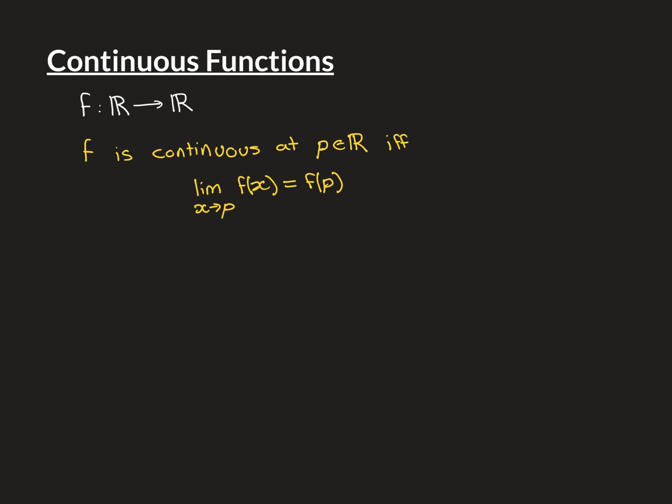If this is true for all elements of the domain, then we say the function is continuous over the entire domain. If the domain is the entire real line and the function is continuous at every point, we say it's continuous over the entire real line. If the domain is a restricted interval and the function is continuous for every p in that interval, then we say it's continuous over the entire interval.